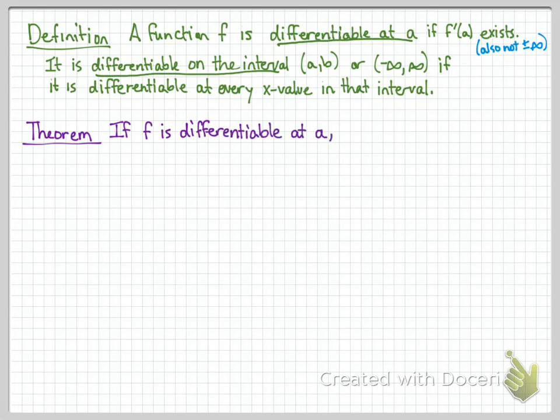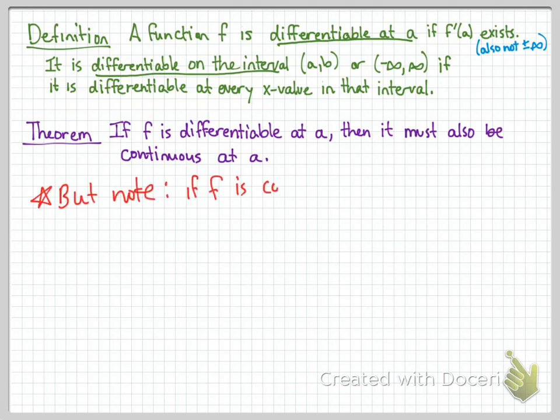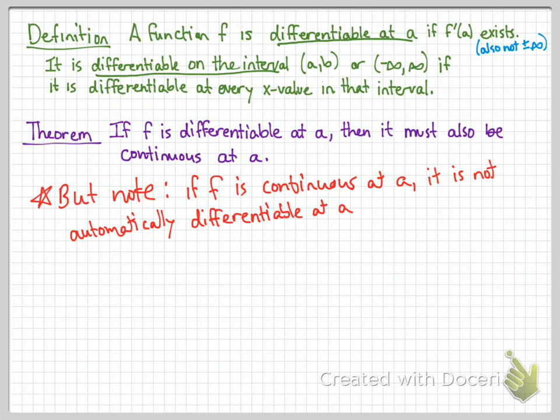And one of the most important facts about differentiability is if you've got a function that has a derivative at the point a, so f is differentiable at a, then you automatically know that it is also continuous at that point. So you can't have a derivative unless you're also continuous. But it doesn't work the other way around. If it's continuous, it's not necessarily differentiable. It might be, it might not be. Okay, so if it's differentiable, then it's continuous. But if it's continuous, you don't know anything about differentiability.